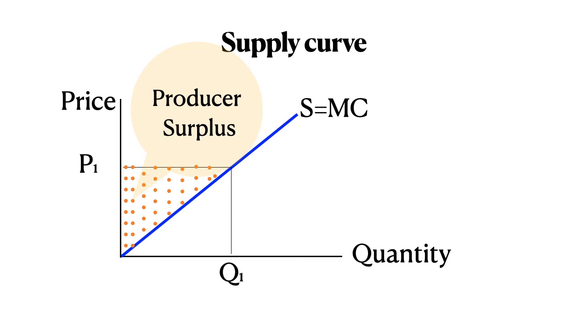So producer surplus is the net value to the producers. It's the difference between the price they receive and the marginal cost of producing it. And so this is a dollar figure, again, it's a profit-like measure. So the producer surplus could be $500 or $5,000 or $5 million, again, depending on the size of the market.